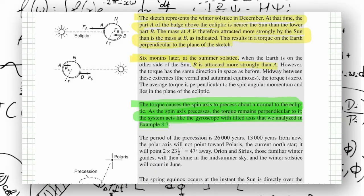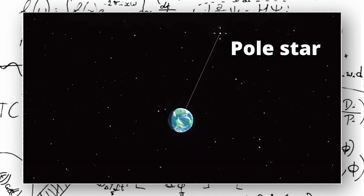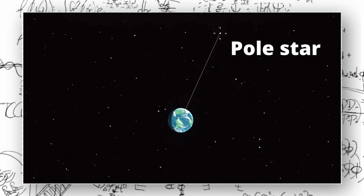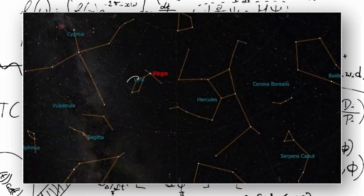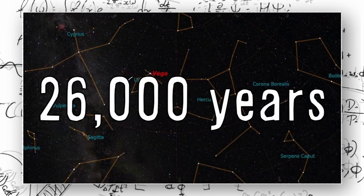Because the planet continues to precess, the Polestar that we see today will not be the same Polestar that our future generations will see as the Earth continues to precess. The time period of this precession is around 26,000 years.